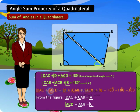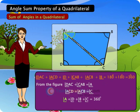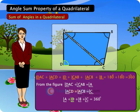Angle ACD plus angle ACB is equal to angle C. So, angle A plus angle D plus angle B plus angle C is equal to 360 degrees.